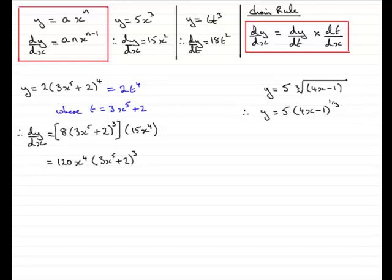So to differentiate this what I'm going to do is think of this as equaling 5t to the power of a third. Where t is clearly 4x minus 1. It's got this kind of format. So I can differentiate it by saying 5 times a third which is going to be 5 thirds. Reduce the power of a third.